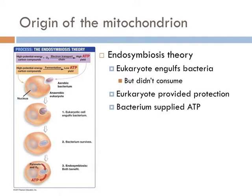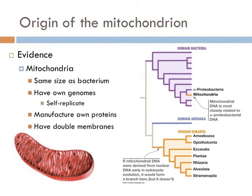So you might ask, where's the evidence? There's actually quite a bit of evidence to support this idea. Mitochondria are tiny — in fact, they're exactly the same size as the average bacterium. The strongest evidence is that mitochondria have their own genome, their own DNA. If you sequence the DNA of the mitochondrion and compare it with taxa from the entire tree of life, the DNA sequence is most closely related to bacteria, not a eukaryote.